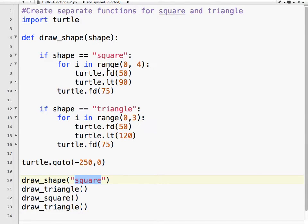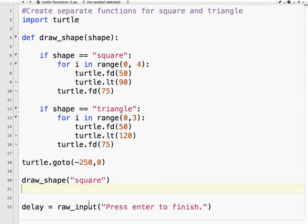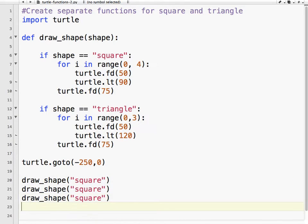So if shape equals square, it's going to do that. And if I send triangle, it's going to do that. So let's delete these. We don't need it. And hopefully if all goes well, we'll get the same result we got last time.